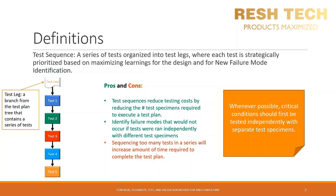Whenever possible, critical conditions should first be tested independently with separate test specimens. For safety and major functions of your product, you should run at least one sample initially to determine if your product meets its requirements for critical test conditions before running these tests in a sequence. This is all part of the test early, fail early, learn early mentality that is upheld by successful and thriving companies.